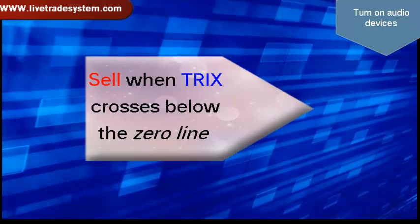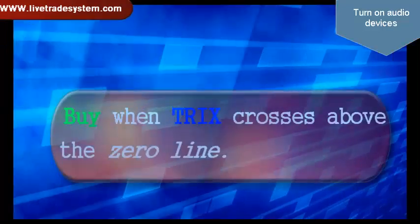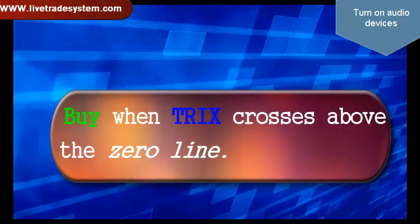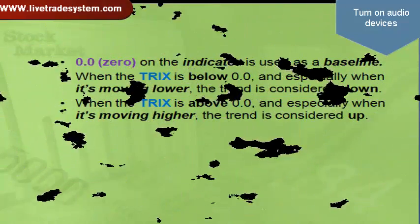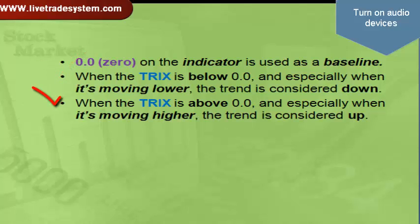Sell when TRIX crosses below the zero line, and buy when TRIX crosses above the zero line. Zero on the indicator is used as a baseline. When TRIX is below zero, and especially when it's moving lower, the trend is considered down. When TRIX is above zero, and especially when it's moving higher, the trend is considered up.